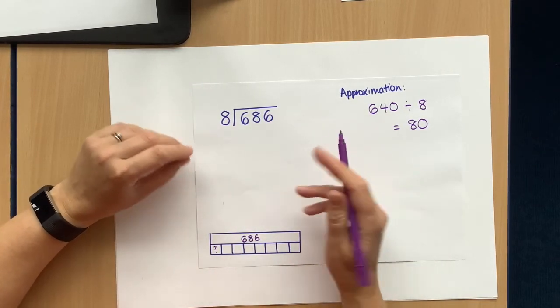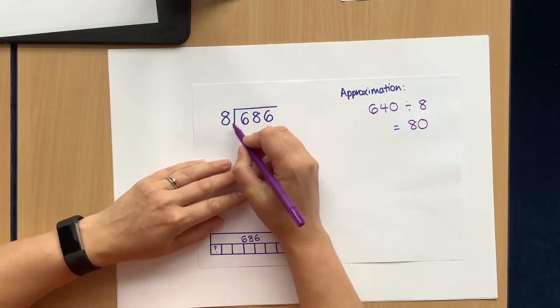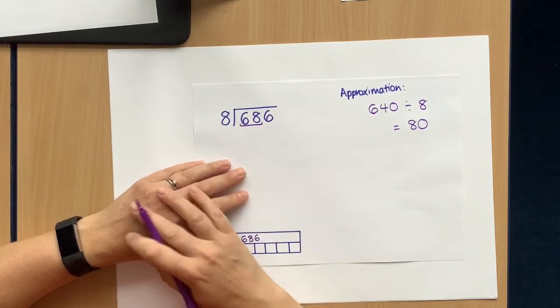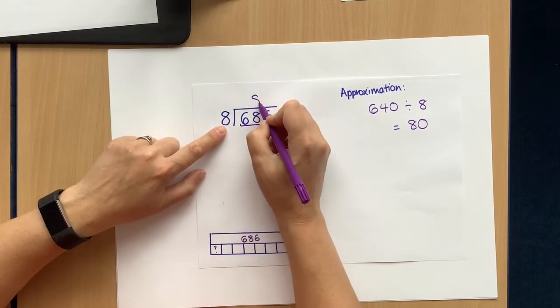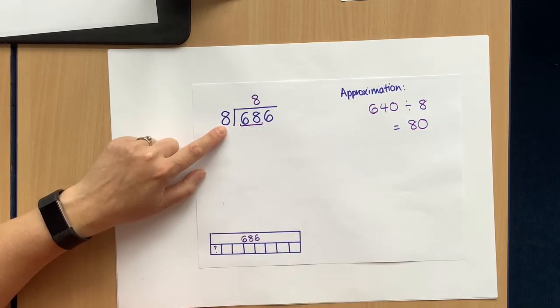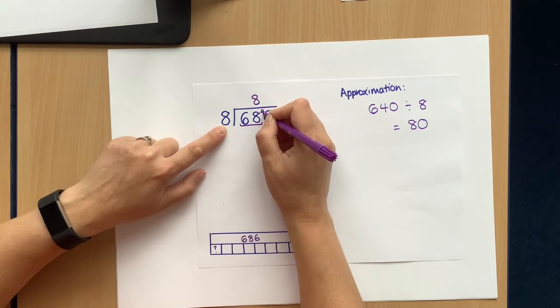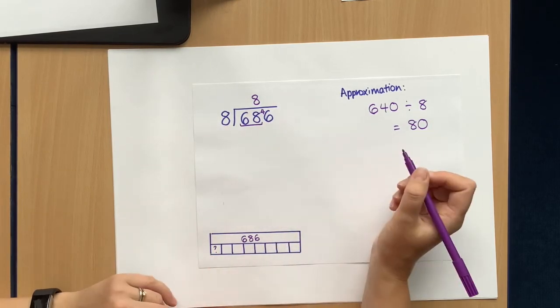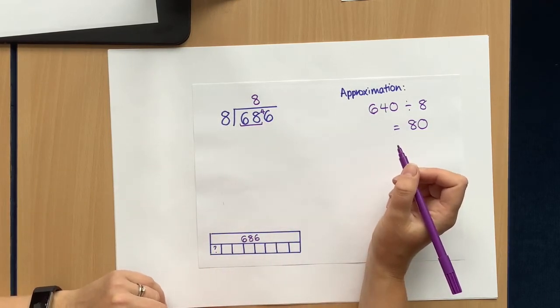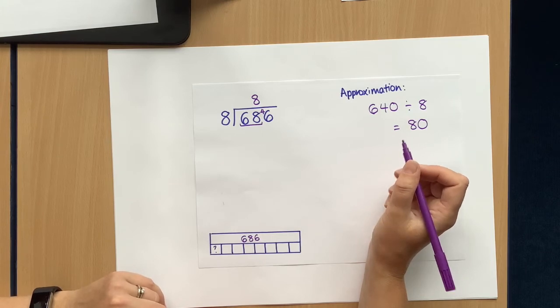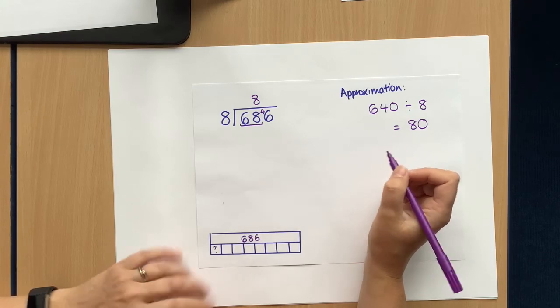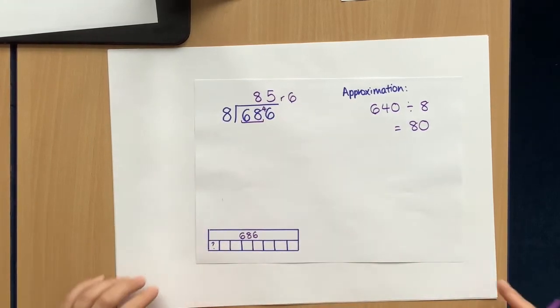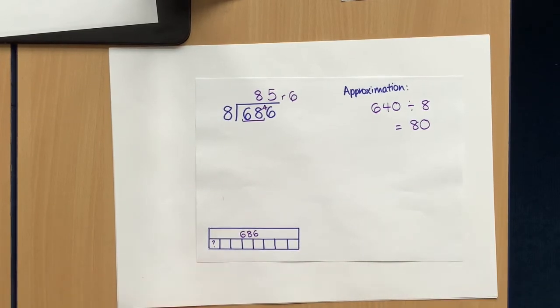Again, I'm going to use short division method. If you want to do the long method, that's absolutely fine. So I've got 600s. I can't share that into 8 equal groups. So I'm going to take that with the tens and have 68 tens. Well, I already know that 8 times 8 is 64. 8 and 8, it's low, it's sick on the floor. 8 times 8 is 64. So 8 go into groups, I've got 4 left, which I put into ones. How many 8s in 46? Well, I know that 7 eights are 56, 6 eights are 48, 5 eights are 40. So I've got 5 eights are 40, and I've got a remainder. So I think the answer is going to be 85 remainder 6.